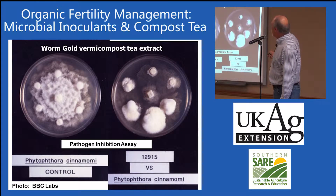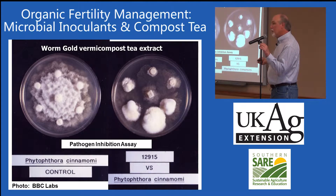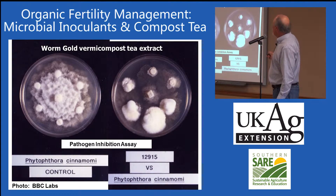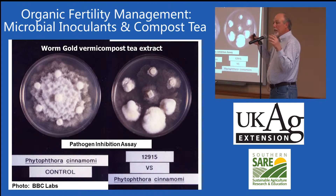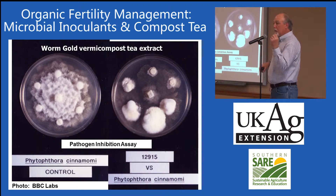In this one, the pathogen is in the middle, but the cotton swabs on the outside were soaked in the worm compost extract. Because of the microbial diversity and density in the worm extract, they were able to fight off the pathogen. This is a classic pathogen inhibition assay — it shows that they have activity against pathogens because they can compete and antagonize against the pathogen.